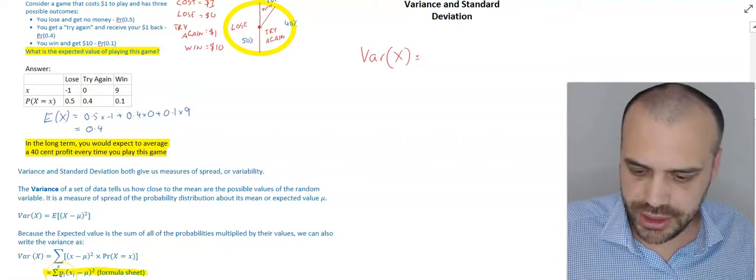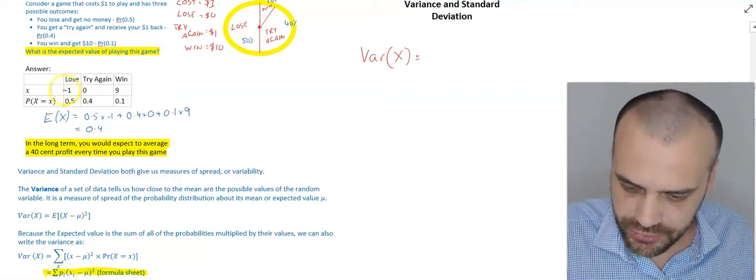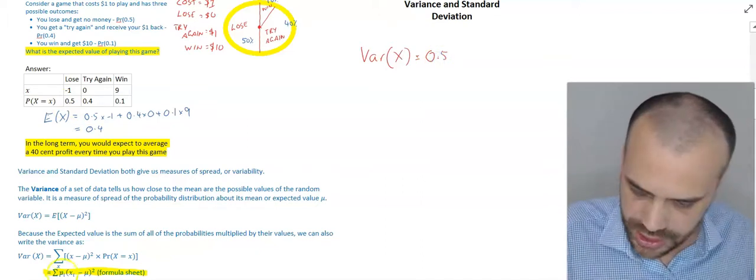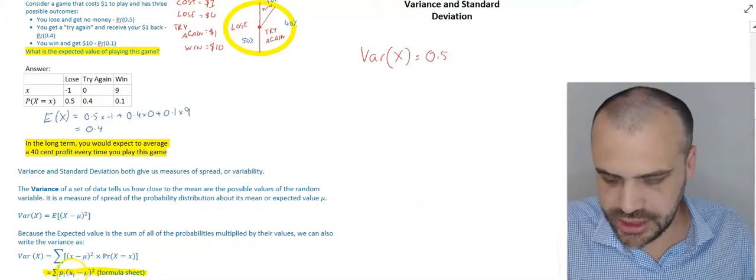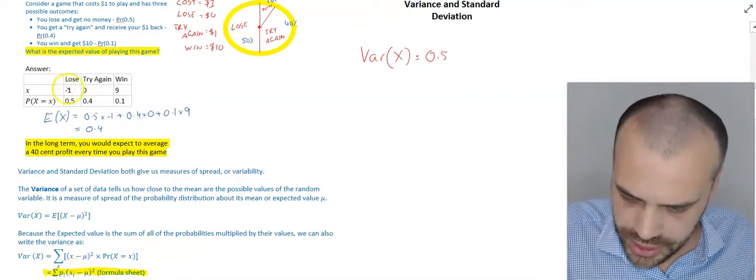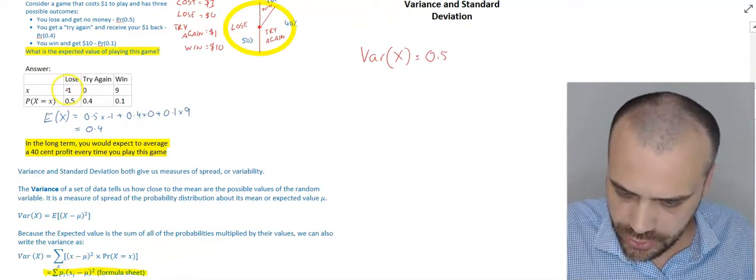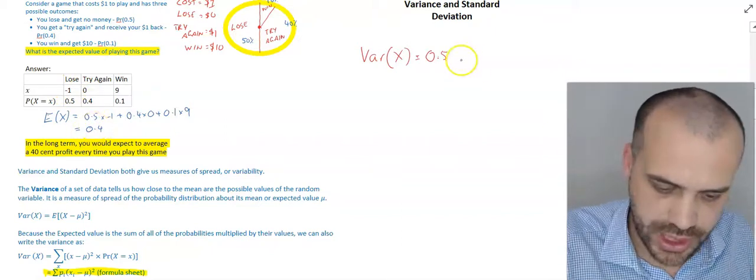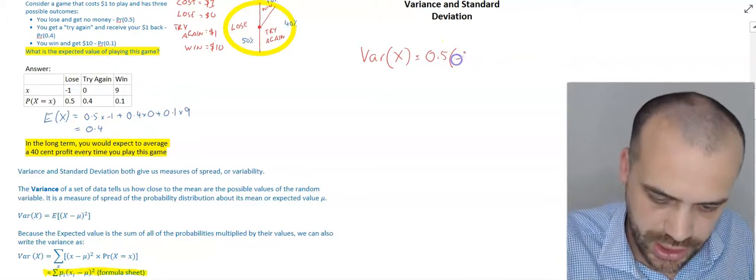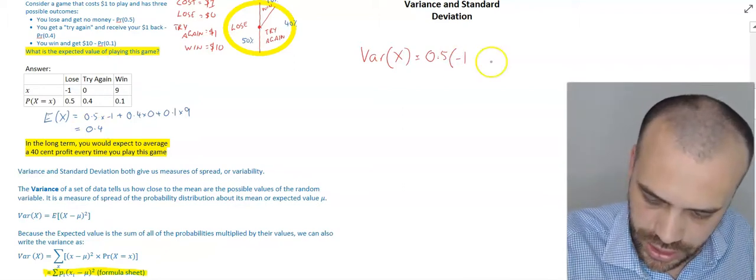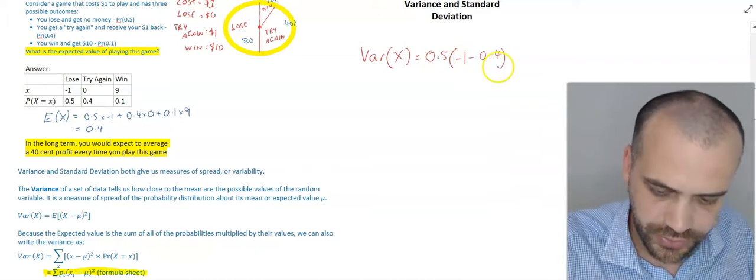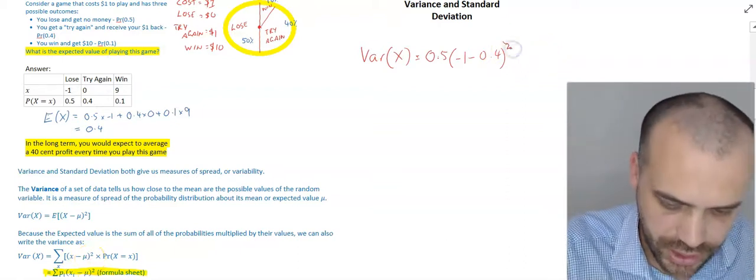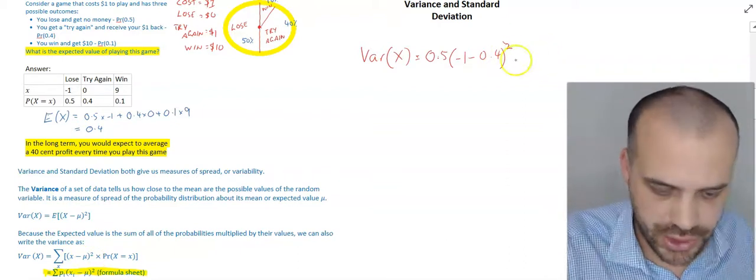Now, the probability. So, we're going to take the probability. Let's take the probability of our first one first. 0.5. And it says, take the probability and multiply it by the x value minus the mean. Now, the x value here is negative 1. And the mean, or the expected value, is 0.4. So, we're taking 0.5 and multiplying it by negative 1 minus 0.4. And then it also says that we're squaring it. So, we need to square that bit there.